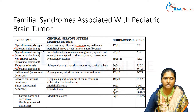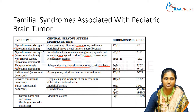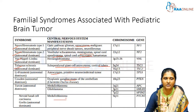In neurofibromatosis type 2, brain tumours include meningiomas, ependymomas, and astrocytomas. In von Hippel-Lindau, hemangioblastoma is associated. In tuberous sclerosis, subependymal giant cell astrocytoma and cortical tubers are the key findings. Other syndromes include Li-Fraumeni syndrome (astrocytoma), Cowden syndrome (gangliocytoma of the cerebellum), Turcot syndrome (medulloblastoma and glioblastoma), and nevoid basal cell carcinoma syndrome (medulloblastoma). Overall, astrocytomas, meningiomas, ependymomas, and medulloblastomas are the common tumours in familial syndromes.